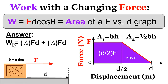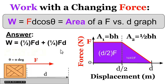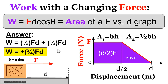So the total work done — the energy transferred to the box — is the area of the rectangle plus the area of the triangle: (1/2)·F·d plus (1/4)·F·d, which simplifies to three-fourths of F times d. Since this is positive work, the energy is transferred into the box.